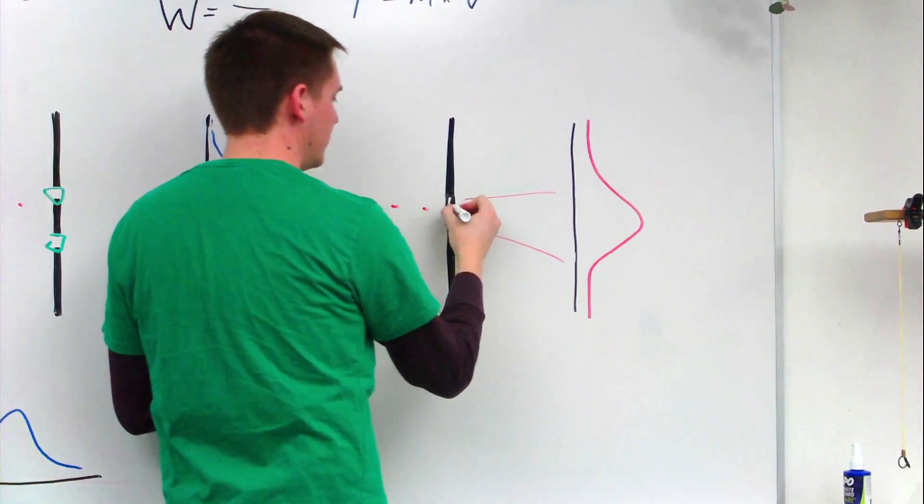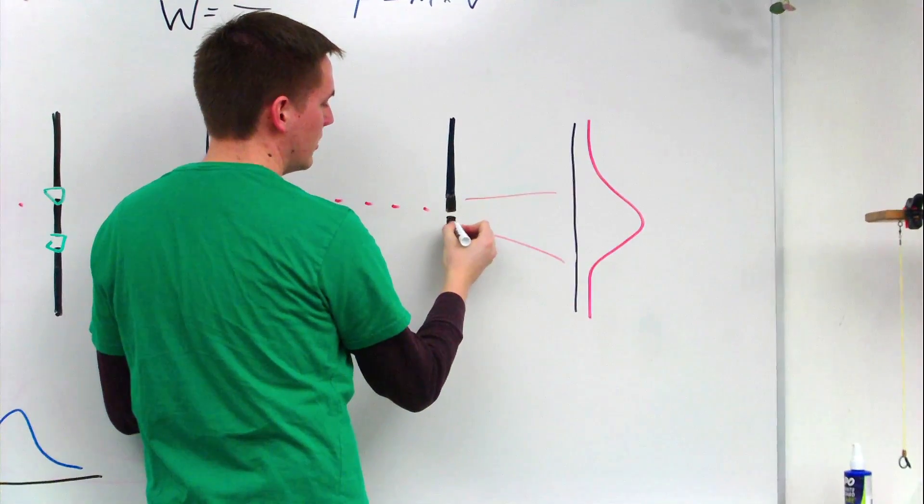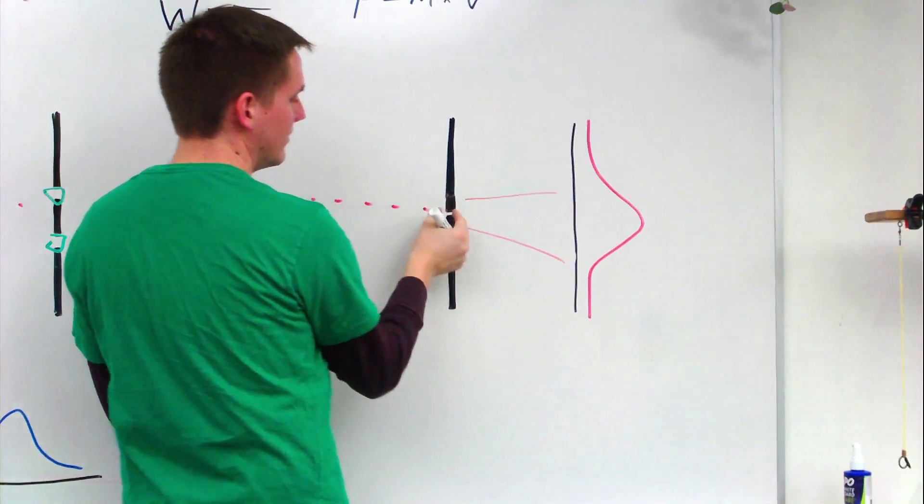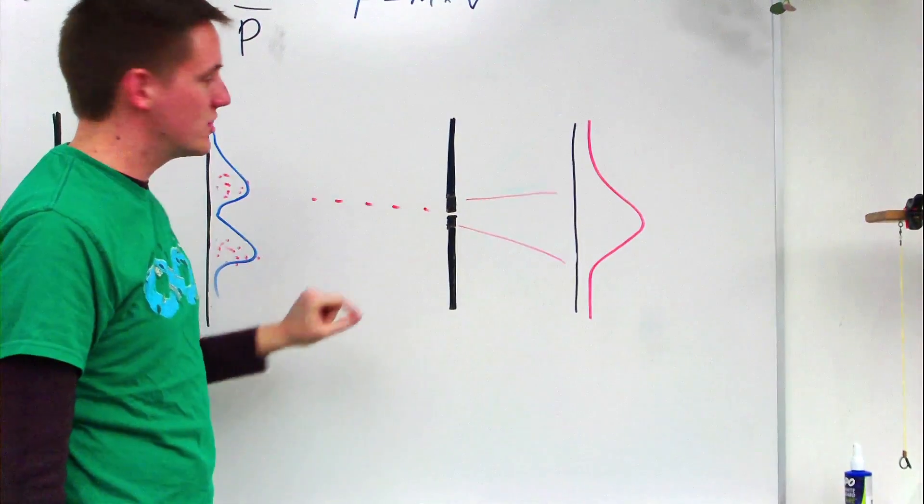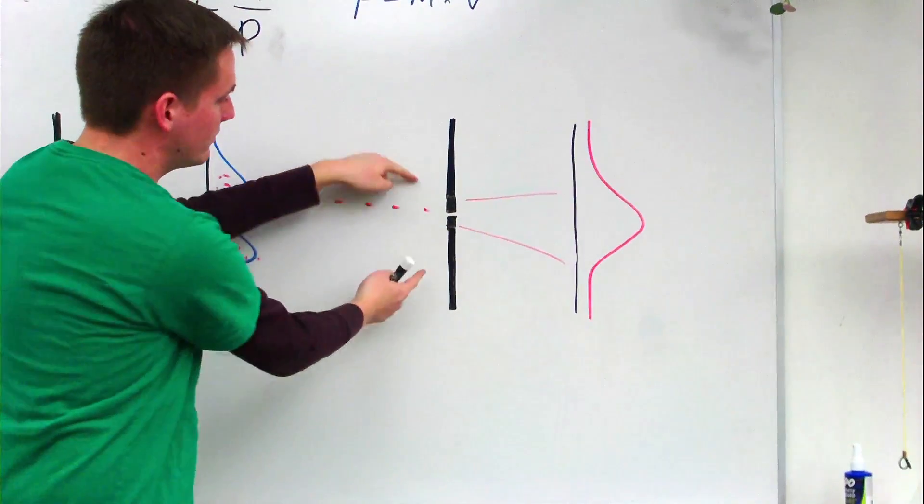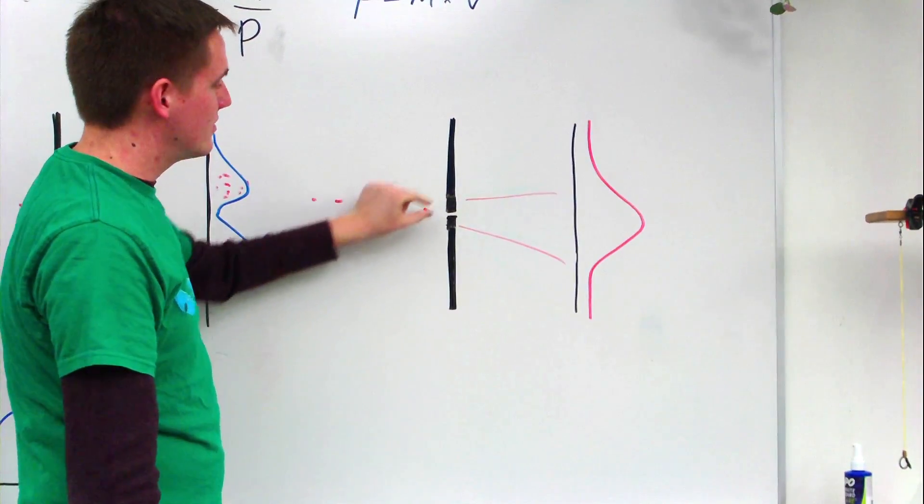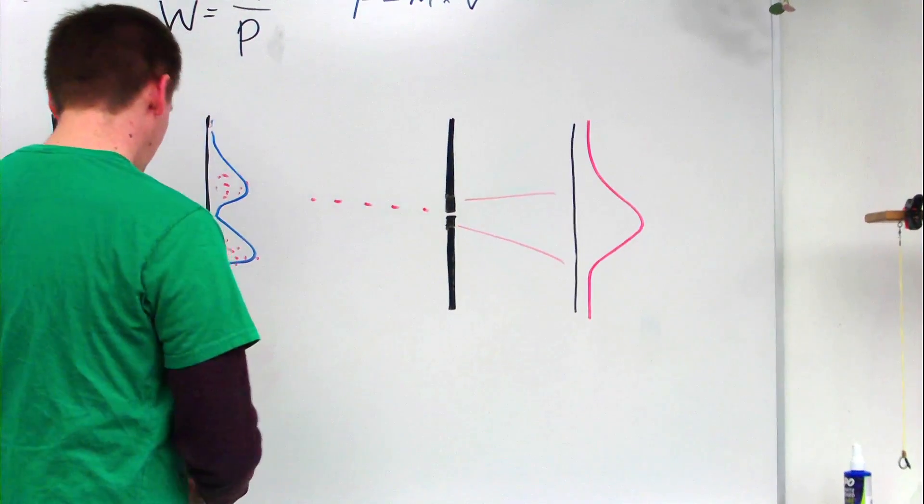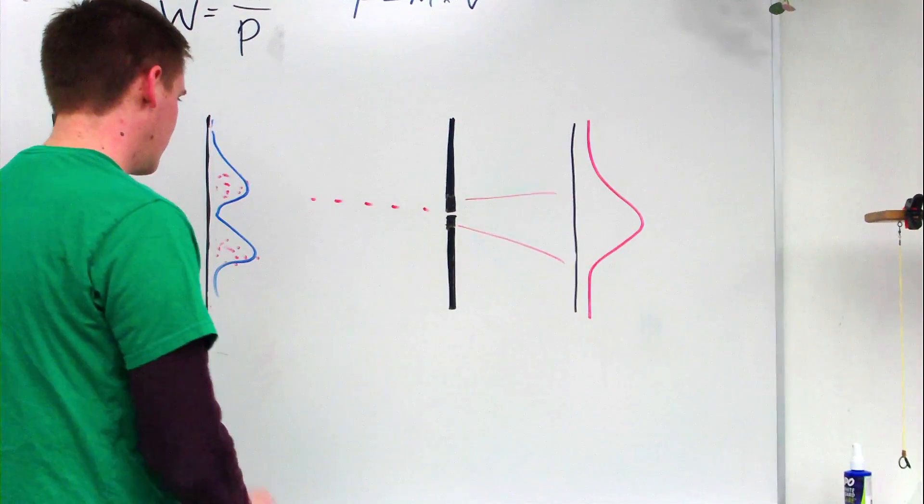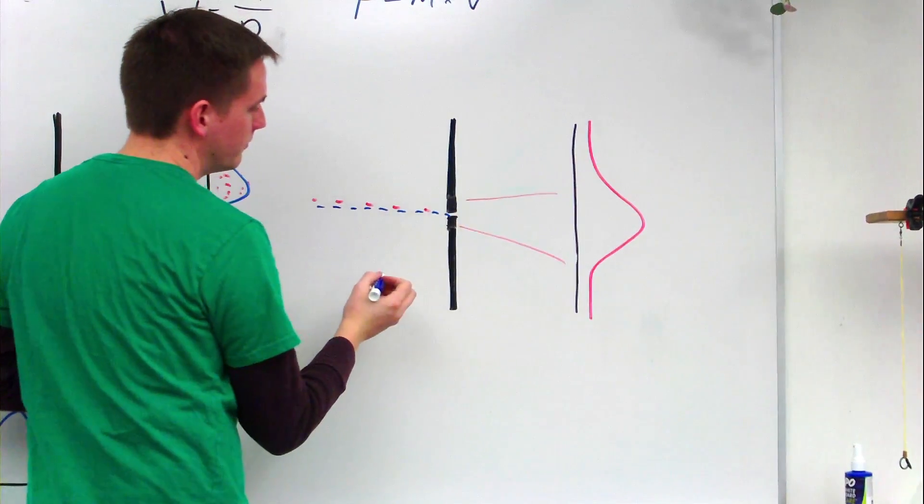But what I'm going to do is I'm going to make this slit right here a lot smaller. I'm making it more narrow. And so because I'm doing that, I know more about the location of the electron as it passes through. I've limited the area where it is, so I know more about its location. And so since I know more about its location, I know less about its movement. And so I know less about what's going to happen as I shoot it through.